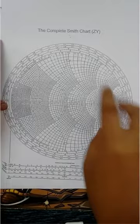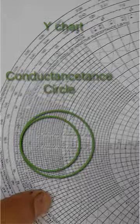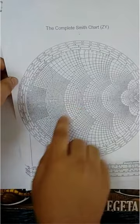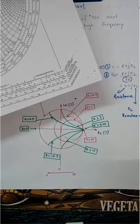The second Smith chart is the ZY combination chart — you can see all the solid circles are for the Z chart, and the dotted lines are used for the Y chart. So you can use this chart for a combination of Z and Y. There is also a third chart — which I don't have here — that contains only Y (admittance) values, plotted in a corresponding way.